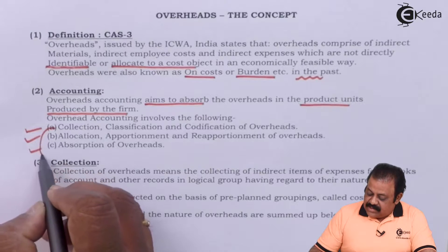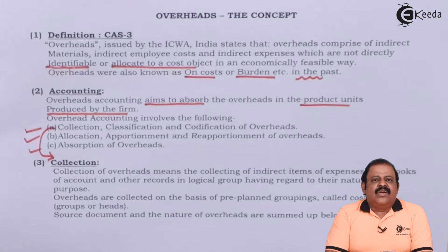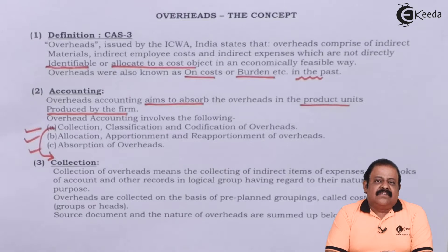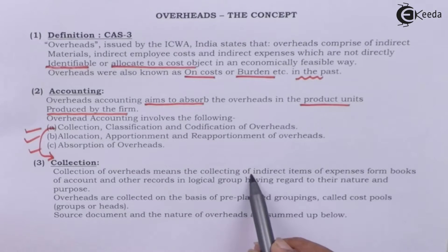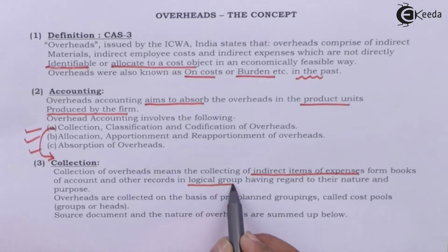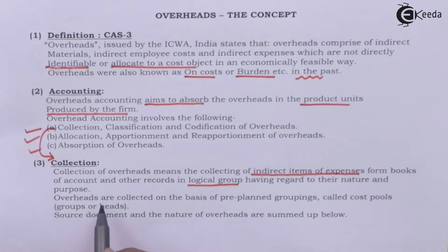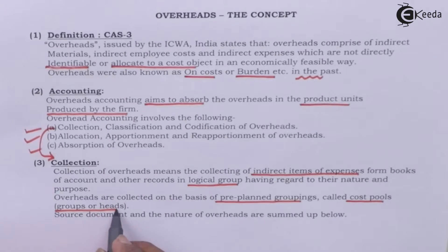Let us see the first part — collection. Collection means an organization is required to find out what overheads are incurred and collect information about them from various accounting documents and other records, including requisition slips raised by departments. Collection of overheads means collecting indirect items of expenses from books of accounts and other records in logical groups, having regard to their nature and purpose. Overheads are collected on the basis of pre-planned groupings called cost pools, or cost groups or heads.